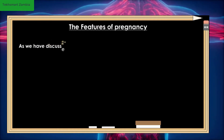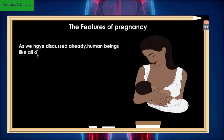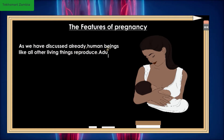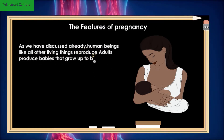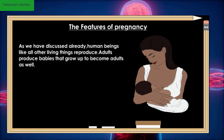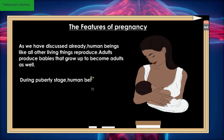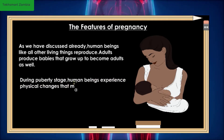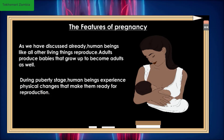As we have discussed already, human beings, like all other living things, reproduce. Reproduction is the process by which living things produce their young or offspring. Adults produce babies that grow up to become adults as well. During the puberty stage, human beings experience physical changes that make them ready for reproduction.